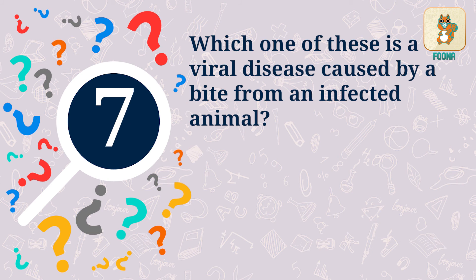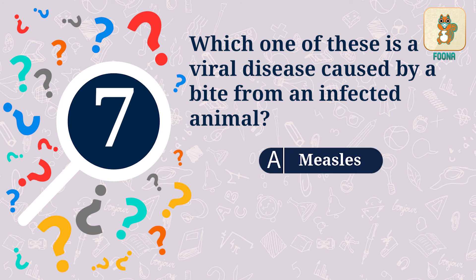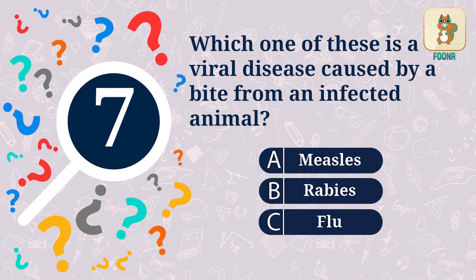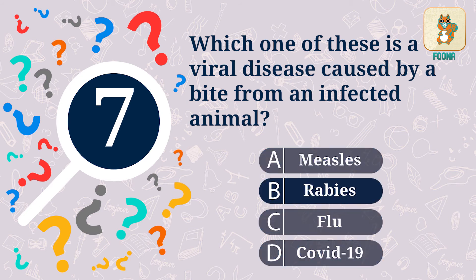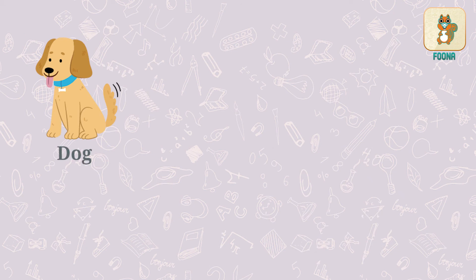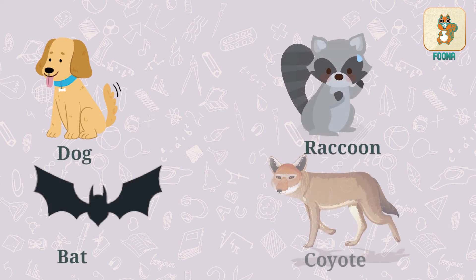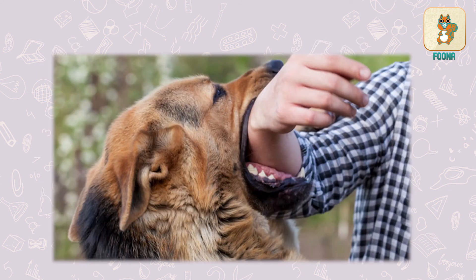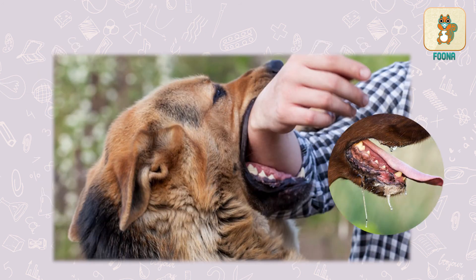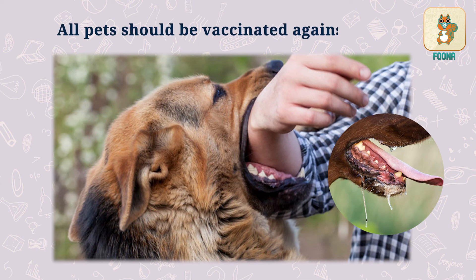Question 7. Which one of these is a viral disease caused by a bite from an infected animal? Measles, rabies, flu, or COVID-19? The answer, of course, is rabies. Animals like dogs, raccoons, bats, and coyotes can be infected with the rabies virus. When they bite a human being, they transfer the virus through their saliva. Rabies is preventable and all pets need to be vaccinated against rabies.